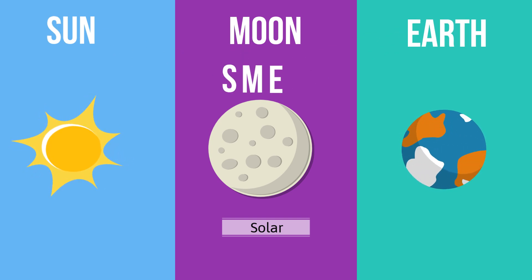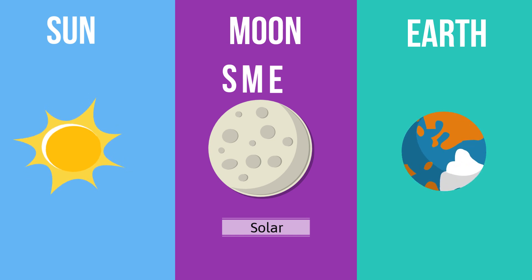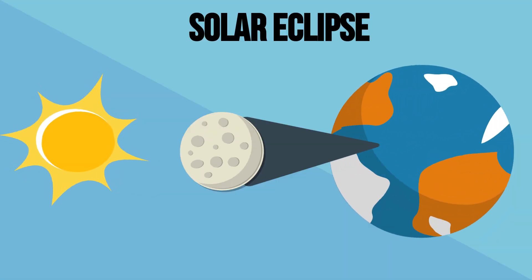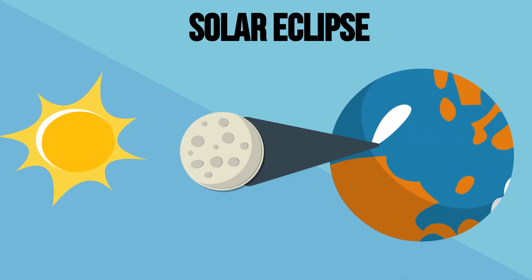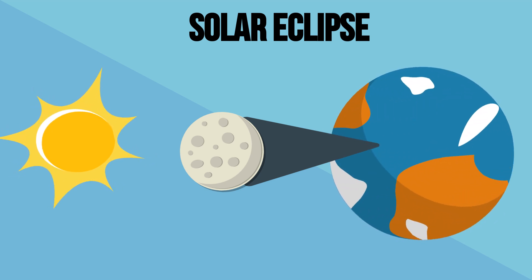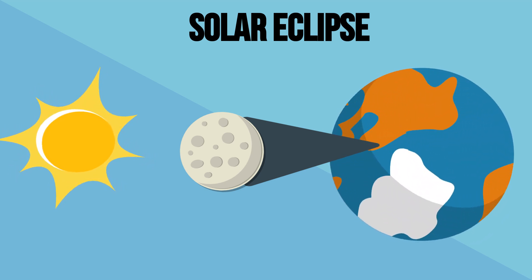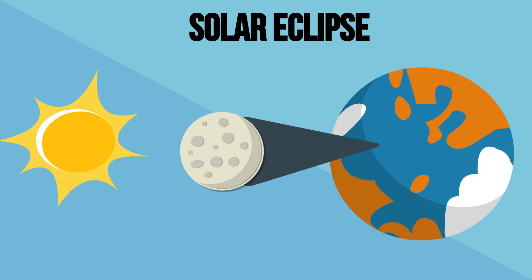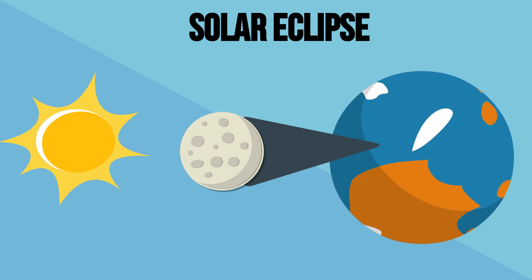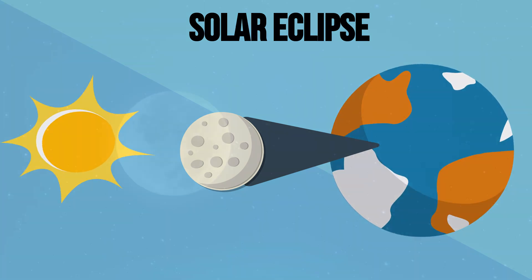Please remember that the shadow of the moon only falls on a small portion of the earth, and people during this portion can look towards the sun to see the solar eclipse. Remember, never look directly at the sun — that's not healthy.